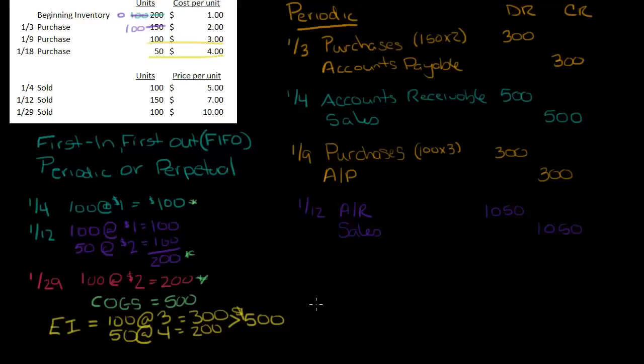And so that's how you proceed through the whole month, is that under periodic, the only thing you have to record is you have to record the sale and then the asset that you're receiving in exchange for the sale, either cash if you're paid in cash or accounts receivable.